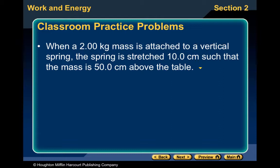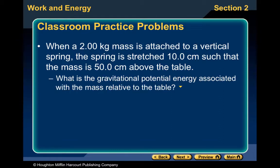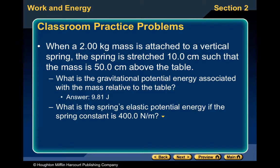Practice problem: when a two-kilogram mass is attached to a vertical spring, the spring is stretched 10 centimeters, so the mass is 50 centimeters above the table — the stretch distance is 40 centimeters, which you convert to meters. Gravitational PE is mgh using 0.50 m as the height; you should get 9.81 joules. Elastic PE uses one-half times k (400 N/m) times the stretch (0.40 m) squared, giving 2.00 joules.